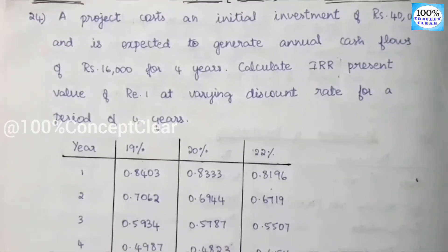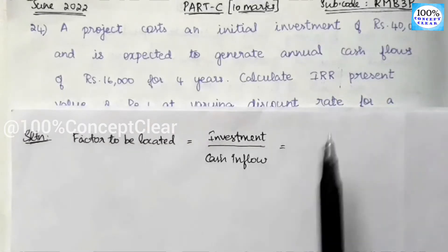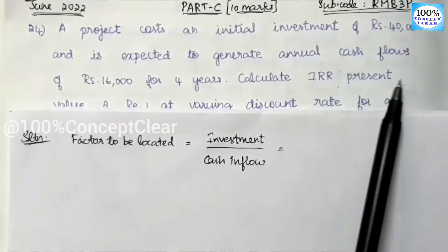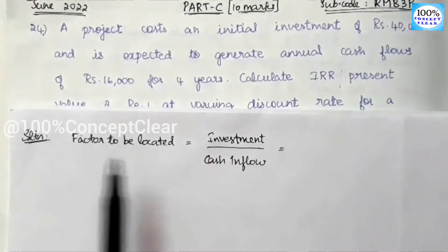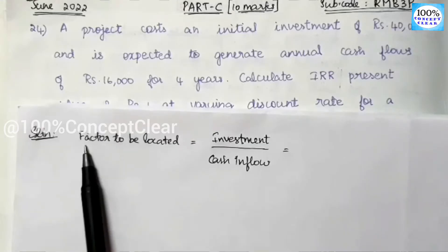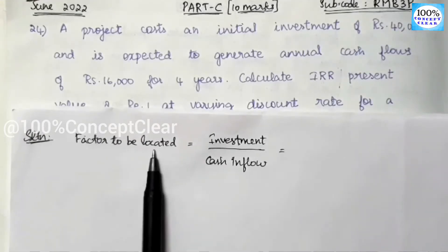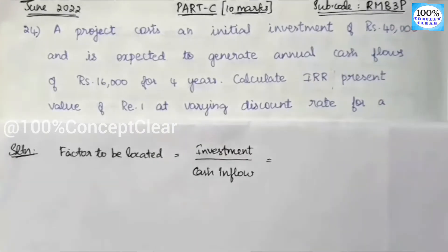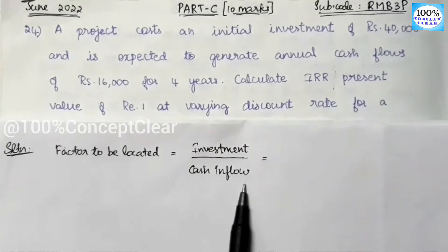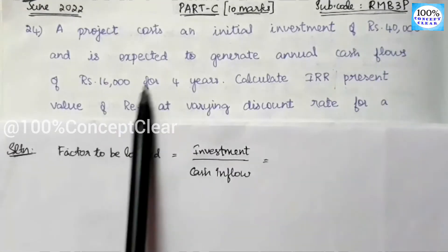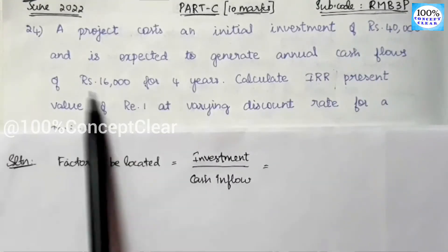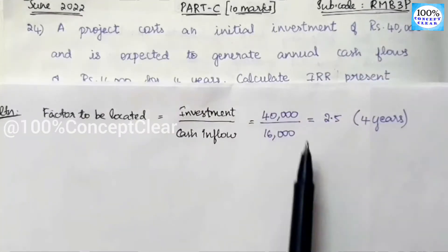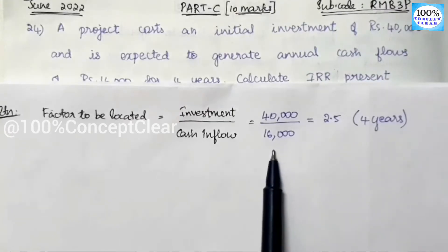Let's look at the solution. Here is the internal rate of return method, specifically for when cash inflows are uniform. In the first step, we find the factor to be located, which equals investment divided by cash inflow. The investment value is Rs.40,000 and the annual cash inflow is Rs.16,000 for 4 years.